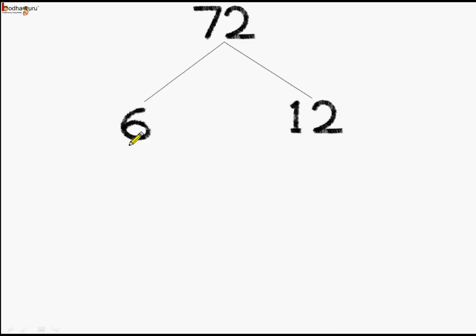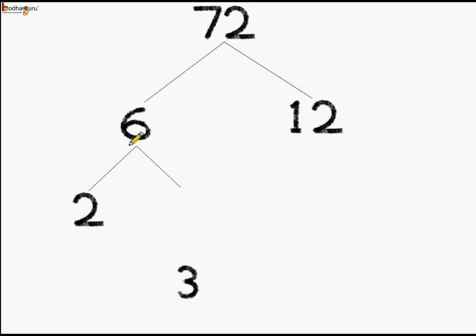Let us see this branch first — 6. 6 is not a prime number, so we can break it down further and write it as 3 into 2. Let us write it down: 2 multiplied by 3, and it gives us 6.